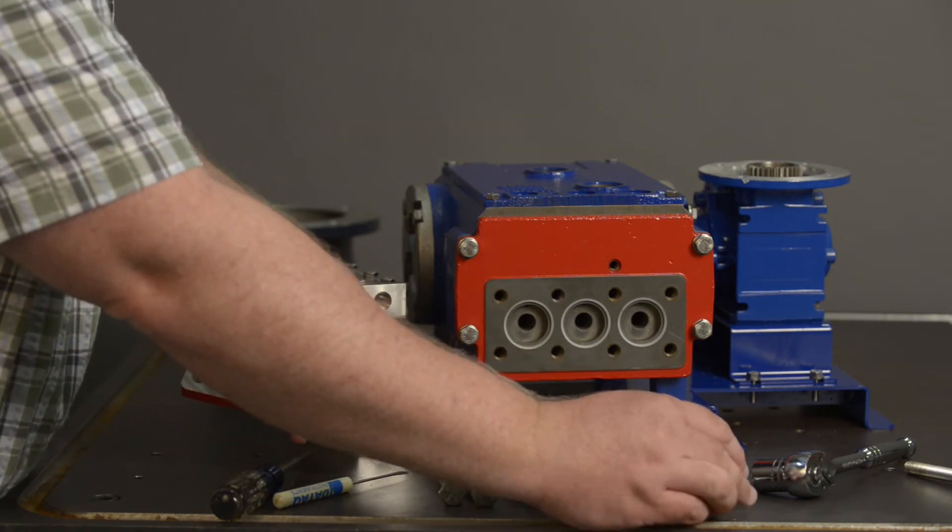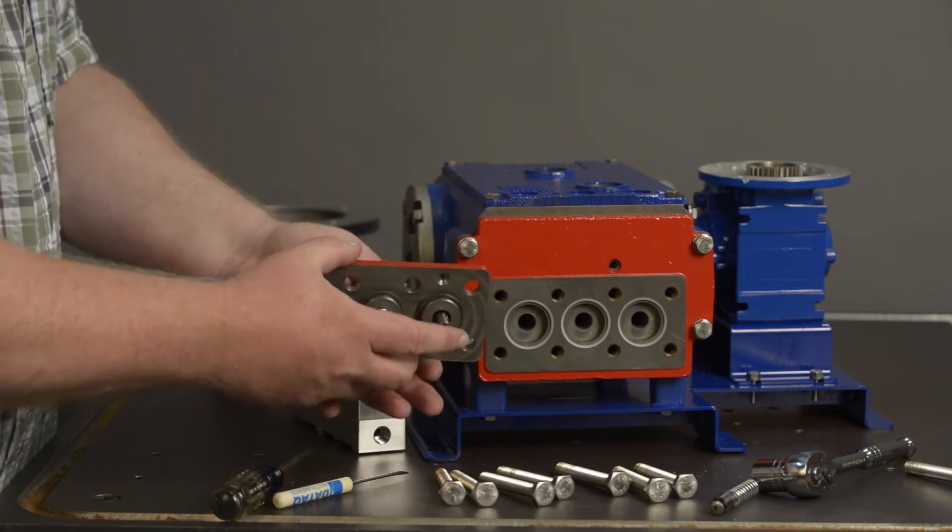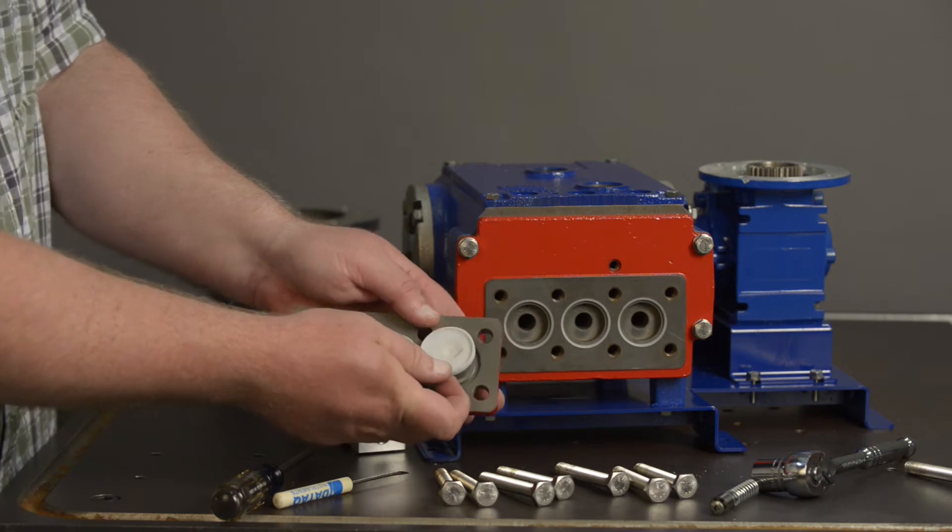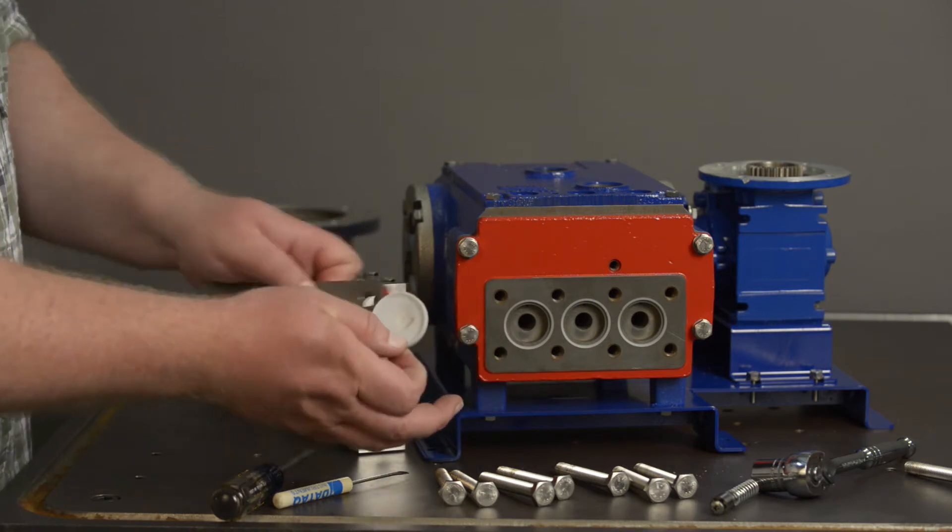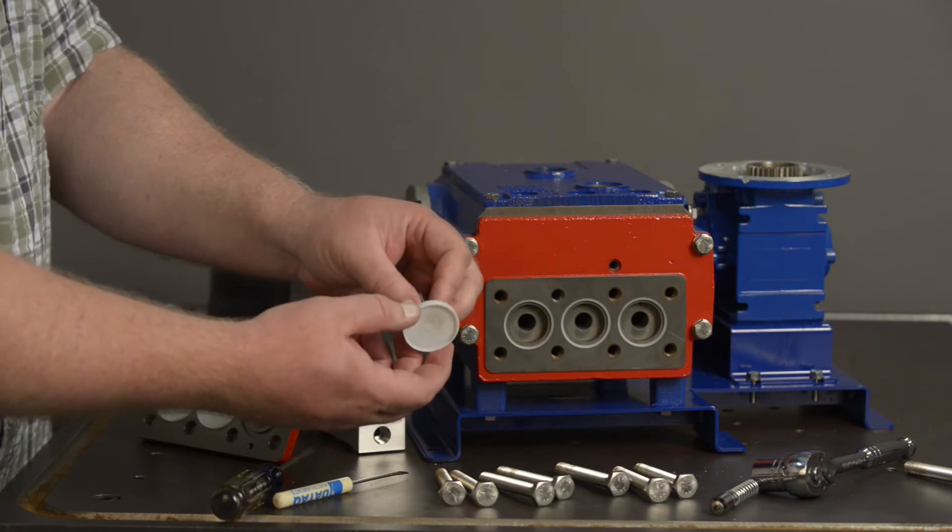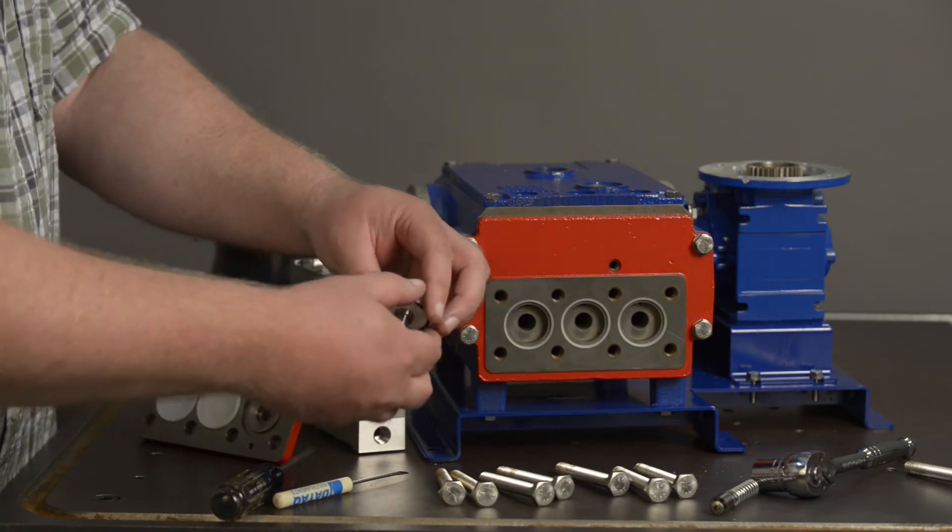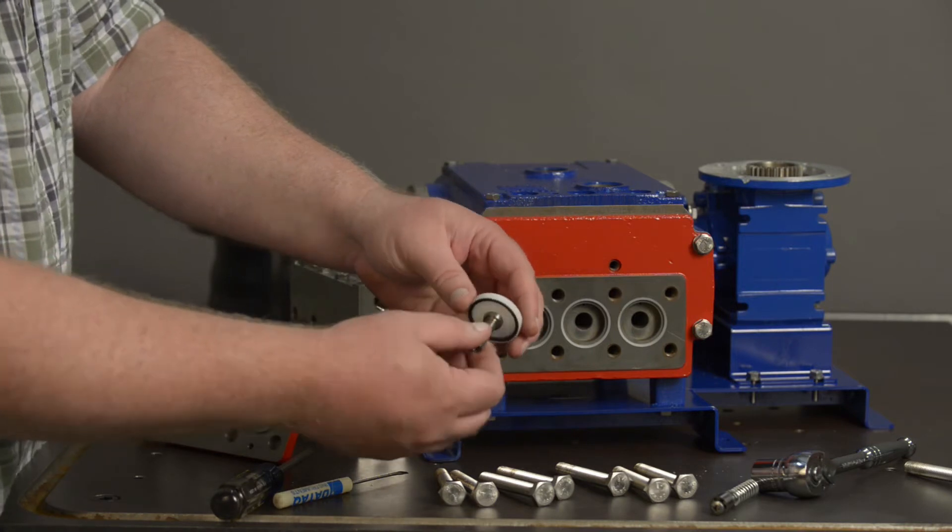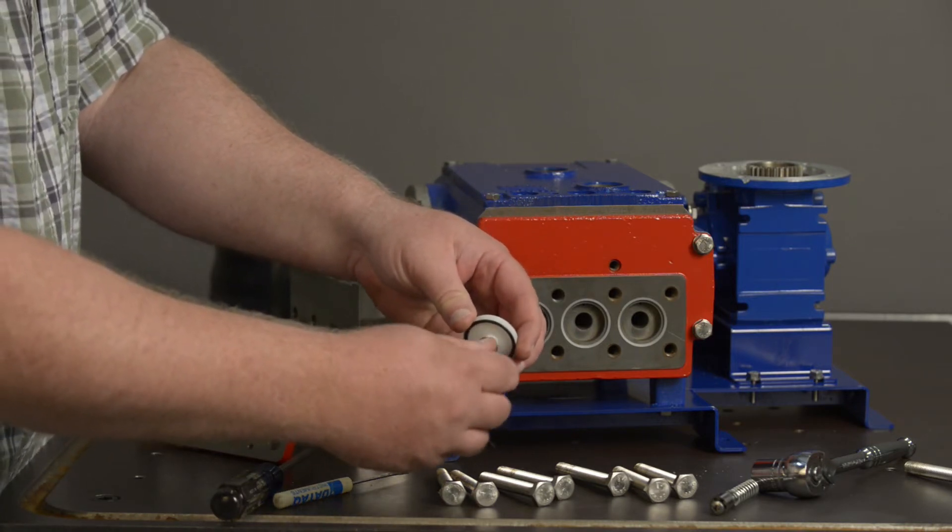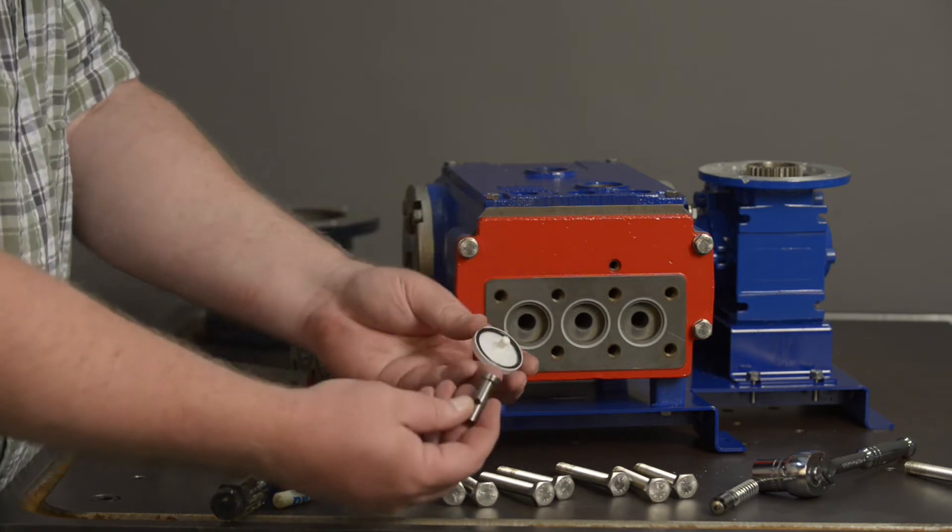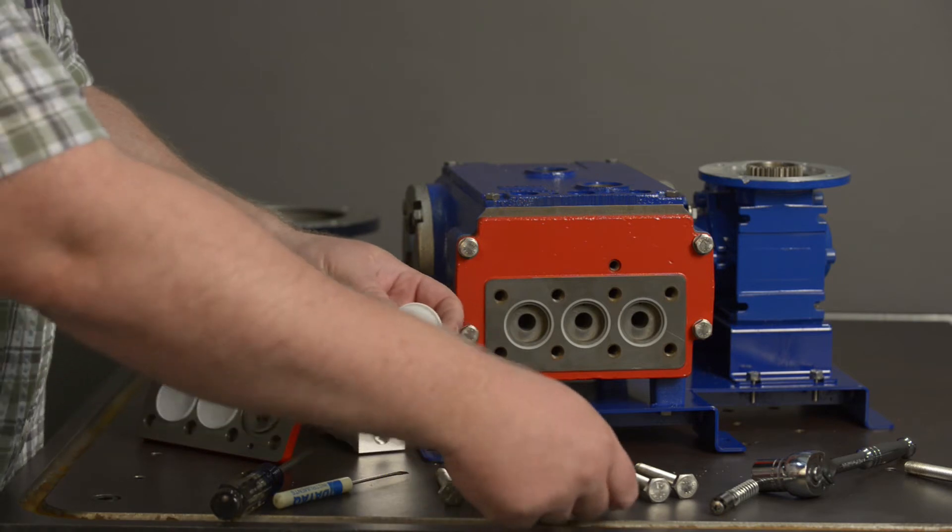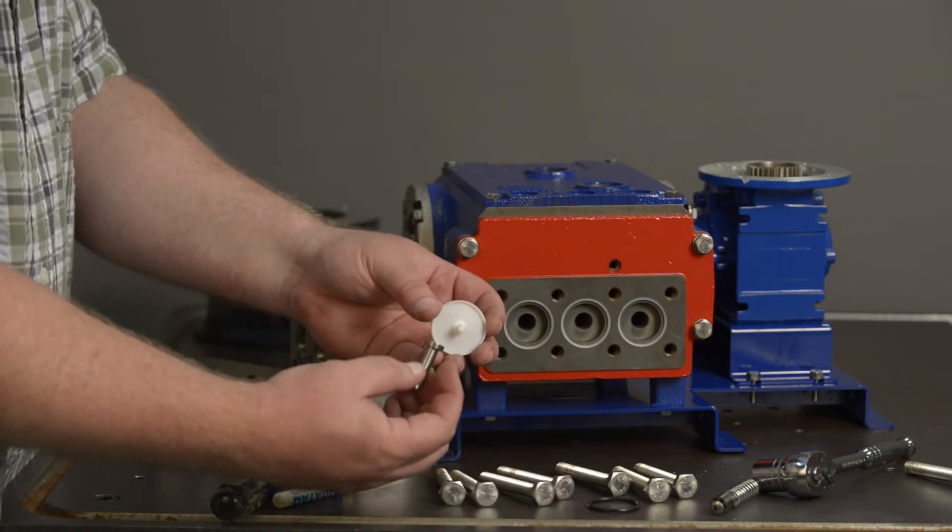Set that off to the side and looking at your diaphragm now, pop that out right from the back side. There's your diaphragm assembly. How to remove that from the stem is it's just finger tight. It just unscrews with ease. And there is your diaphragm, the O-ring on the back side of the diaphragm, and your diaphragm stem.